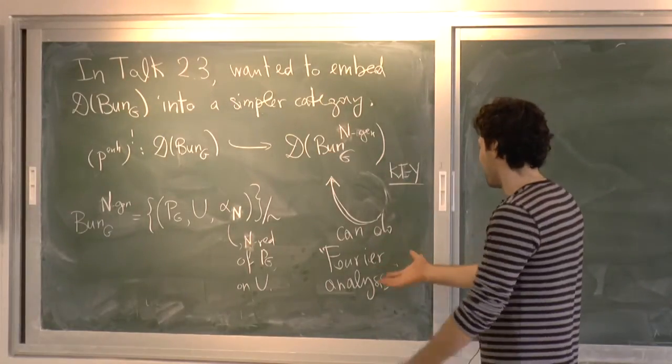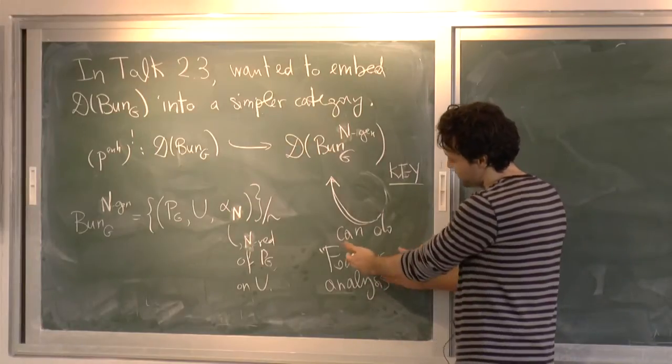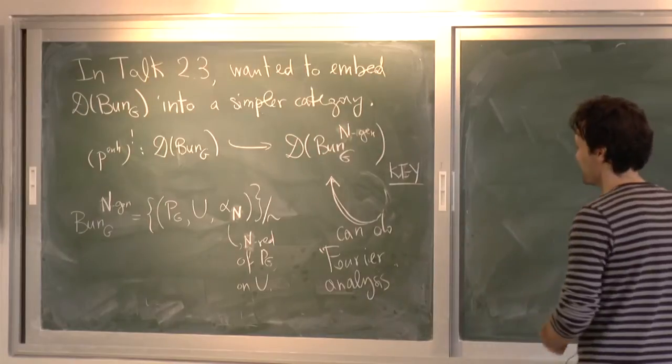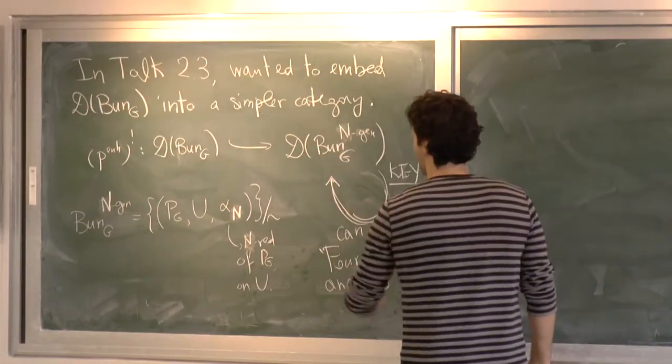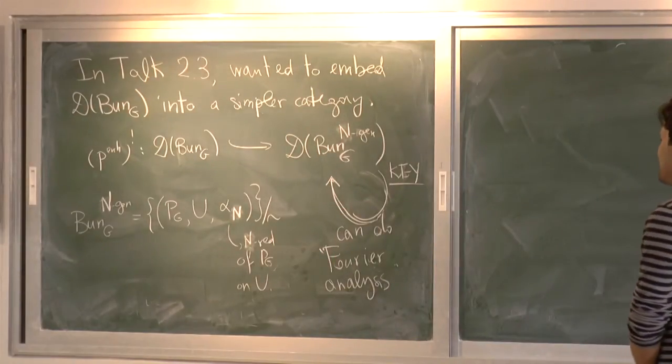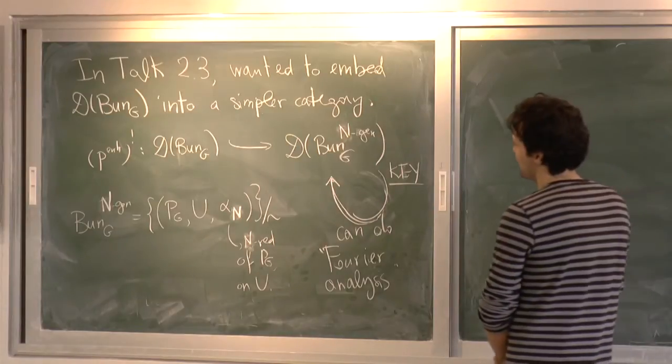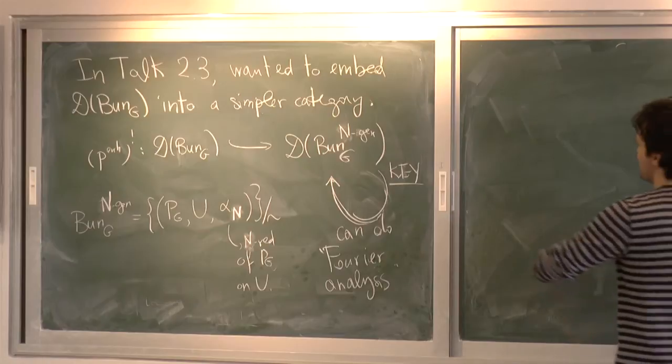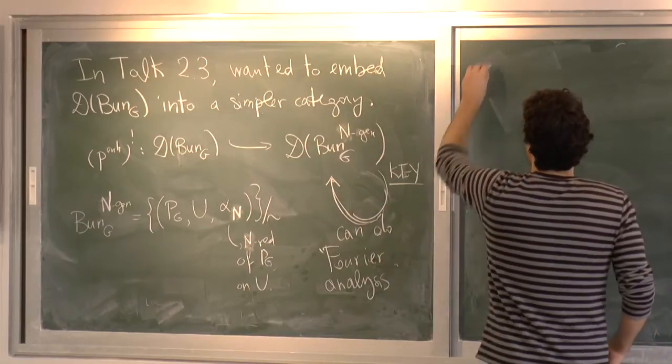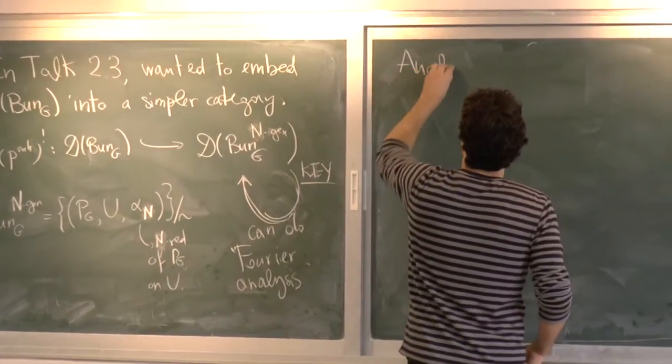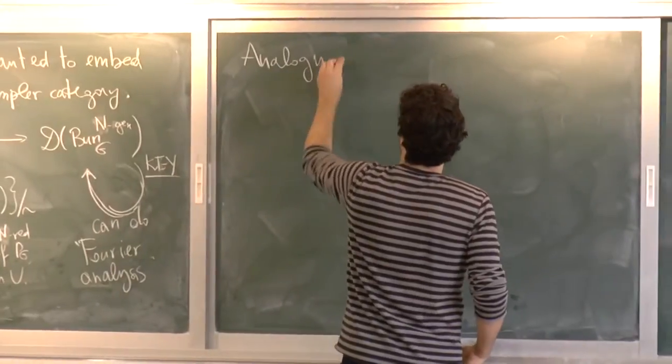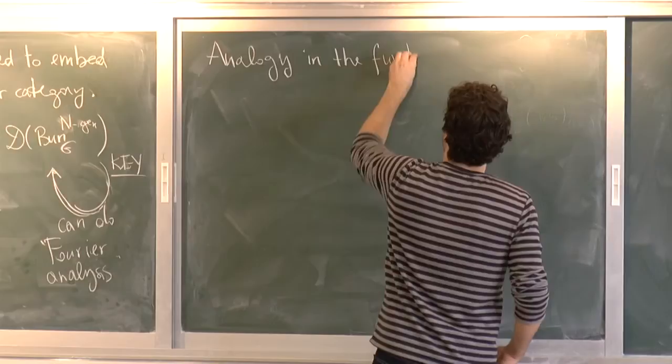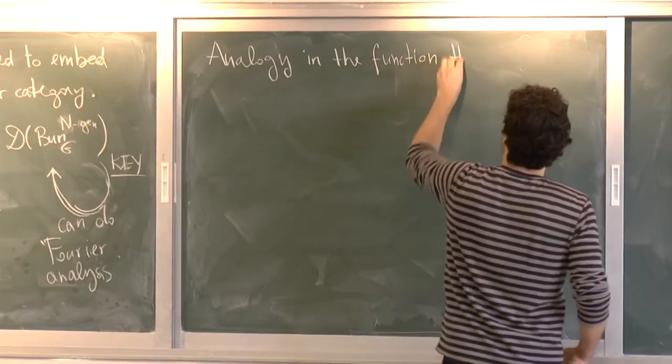I'm going to motivate what I mean by this. And I want to explain that in number theory. But so if you believe me, then this must be a good idea, because Fourier transform, Fourier analysis has always been a good idea. And to explain this good idea, as I said, I should go to number theory, or better, to function theory. So I need to draw an analogy in the function theory setting.